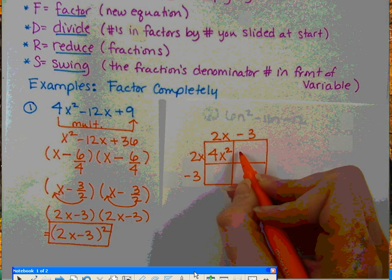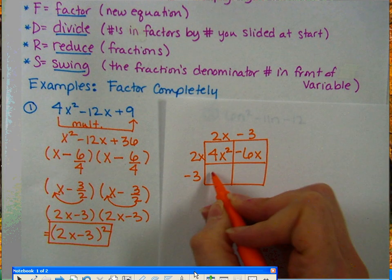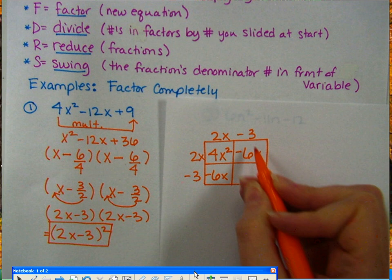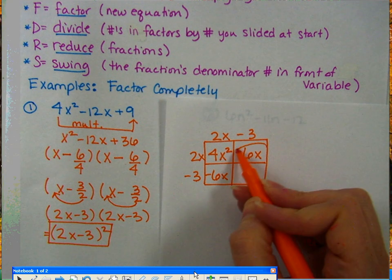So 2x times 2x gives you 4x². 2x times negative 3 gives you negative 6x. Negative 3 times 2x gives you negative 6x. Negative 3 times negative 3 gives you positive 9. Then we have like terms right here that we're going to combine.